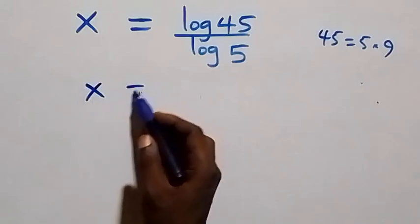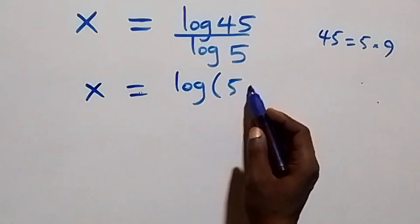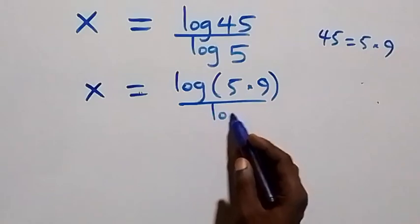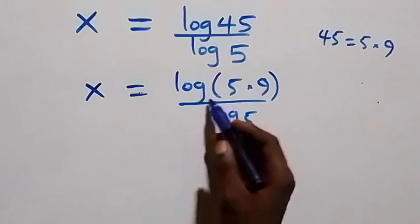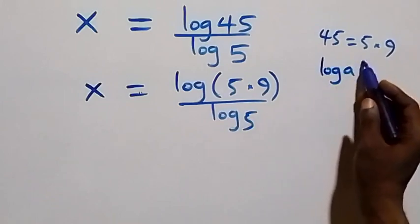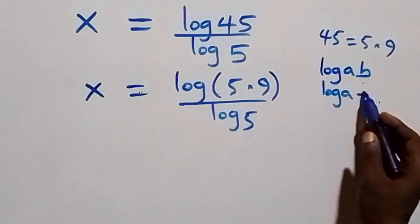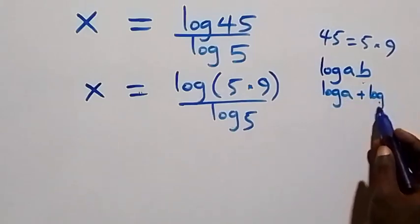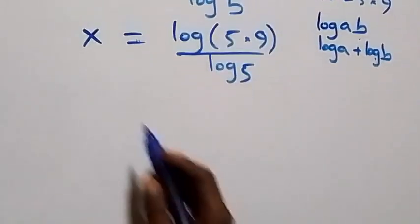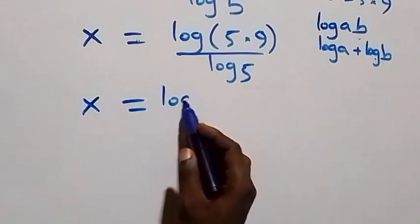From here we can express 45 as 5 times 9. So we have x equals log(5 times 9) over log 5. Then what we have here follows from the log product rule: log(a times b) is the same thing as log a plus log b. That is, here we have x equals log 5 plus log 9, all over log 5.